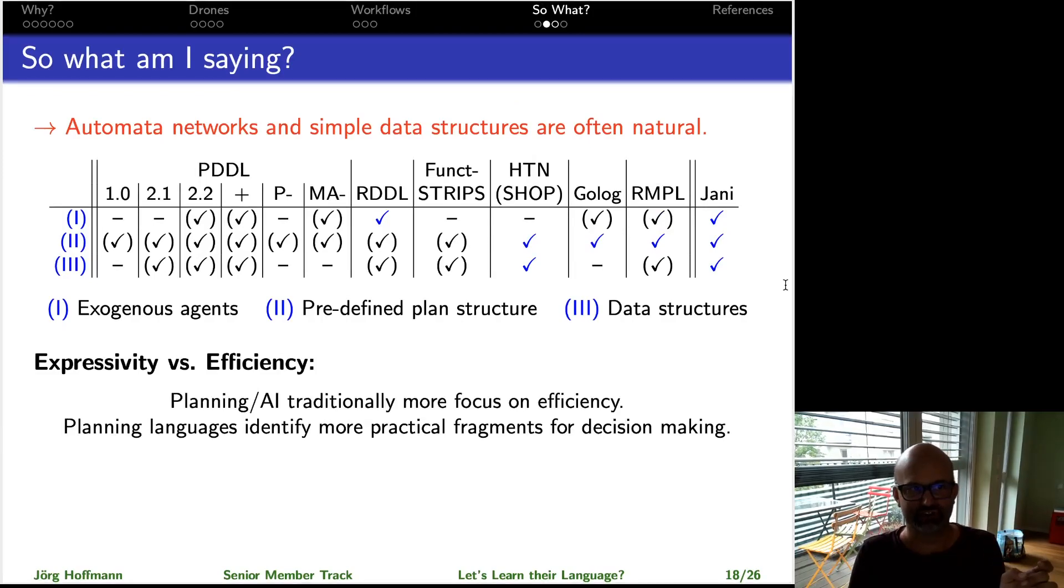Because, of course, there's a question of the trade-off between expressivity and efficiency. Just because a language like JANI is able to model it all, it doesn't mean you can solve it all. And in particular, in general, it is of course true that AI has more of a focus on practical efficiency, whereas verification formal methods have a focus on just exhausting everything.